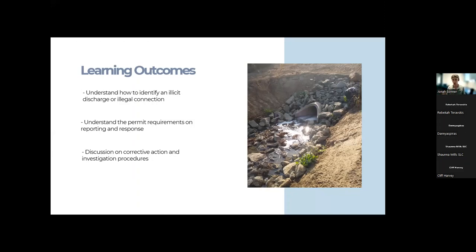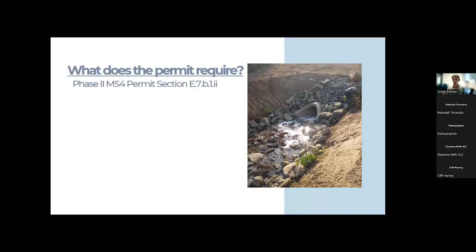Let's look at Section E7 B1 of the Phase 2 MS4 permit. MS4 stands for Municipal Separate Storm Sewer System. This section covers education requirements for field staff on illicit discharge detection. What does it require of us?